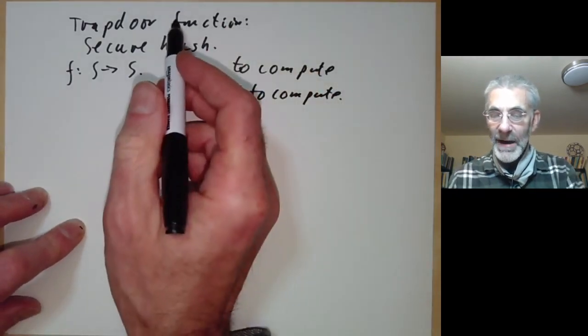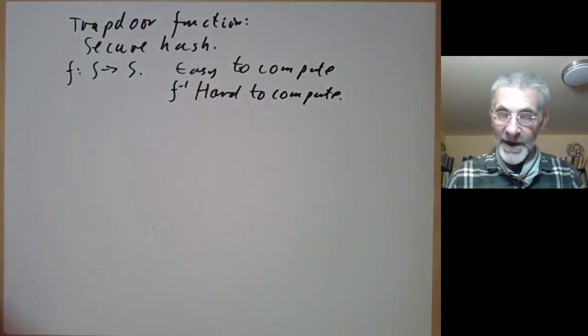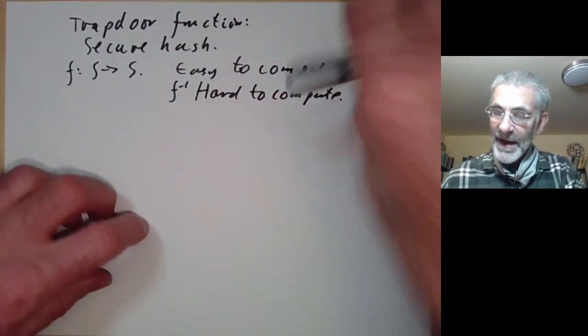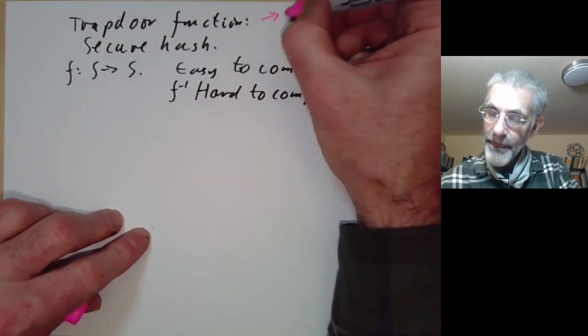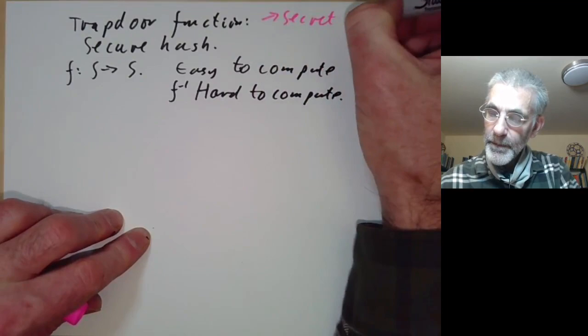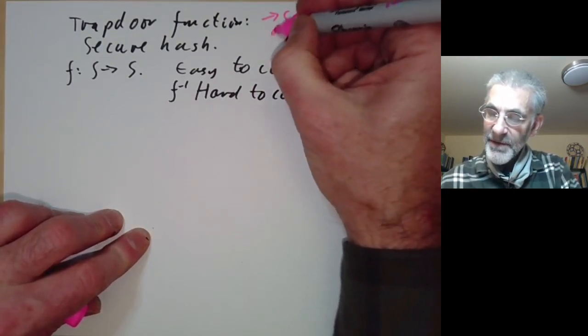The difference between a trapdoor function and a secure hash is the trapdoor function has a secret key that allows you to invert it, but a secure hash doesn't.